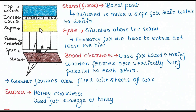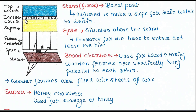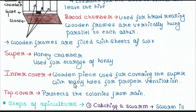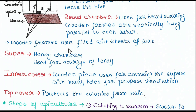Next is the super. This is basically the honey chamber and is used for storage of honey. Next is the inner cover — this is the wooden piece used for covering the super, with many holes for proper ventilation. So the inner cover is used basically for ventilation purposes.